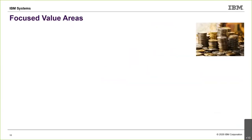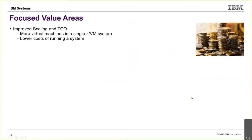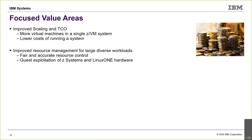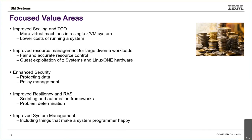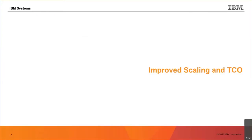Now let me shift to our focus value areas. I'll pull out items for each. First, scaling and TCO — our bread and butter, about having a robust hypervisor to run a lot of things. Second, resource management. Third, security — some would argue that should be number one. Fourth, resiliency and RAS. Fifth, improving systems management — or as I jokingly say, keeping the system programmer happy. Many items fit under multiple value areas.